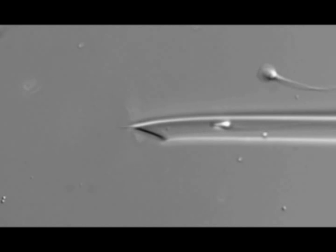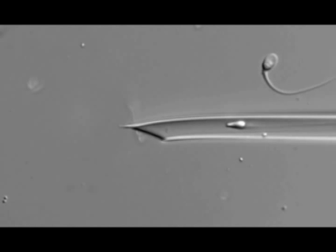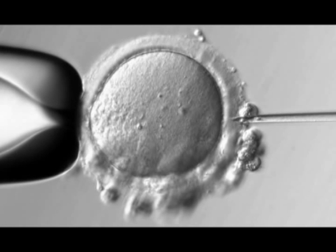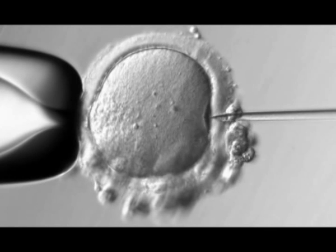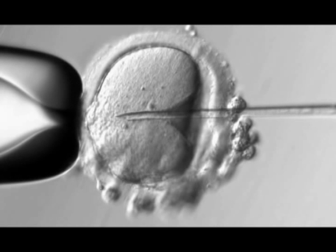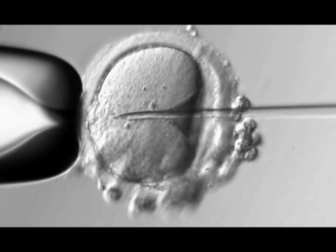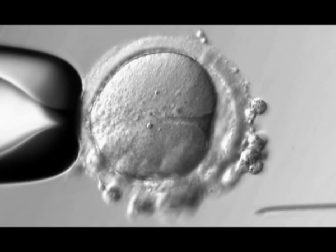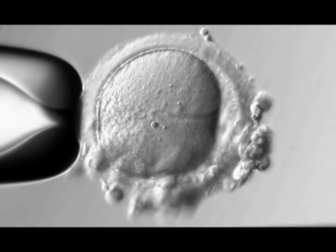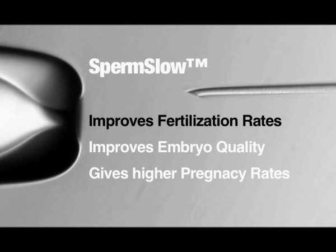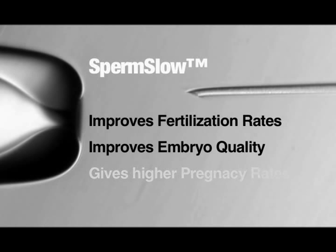After the sperm has been aspirated, it's immediately injected into the cytoplasm of the oocyte. Use of SpermSlow has been shown to improve fertilization rates, embryo quality and pregnancy rates.